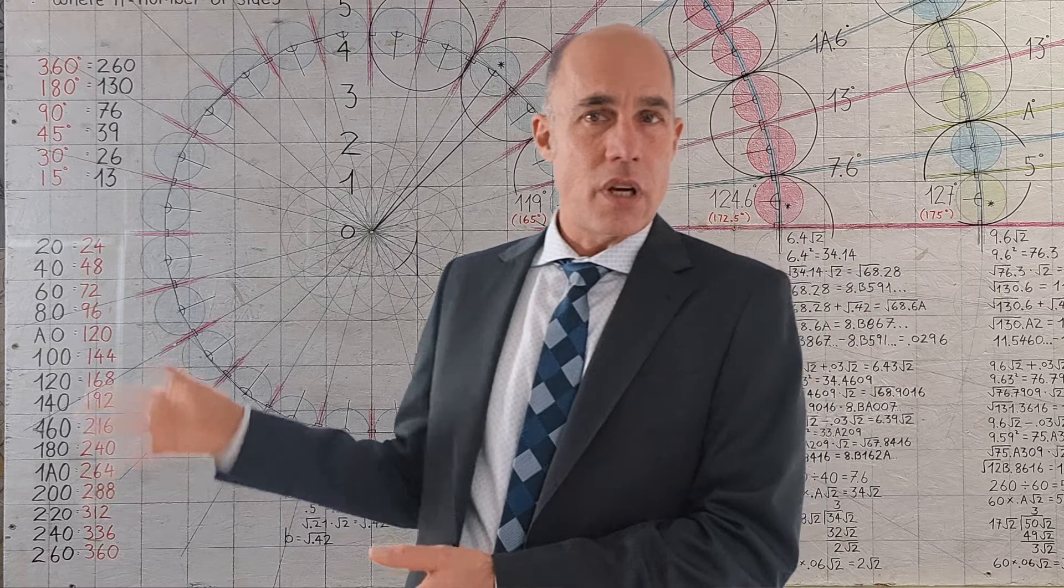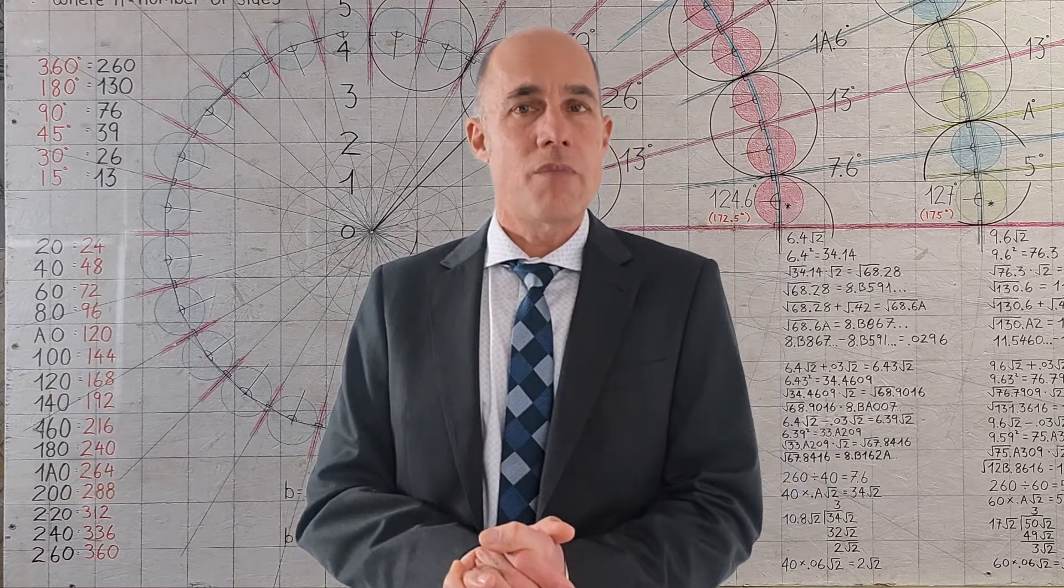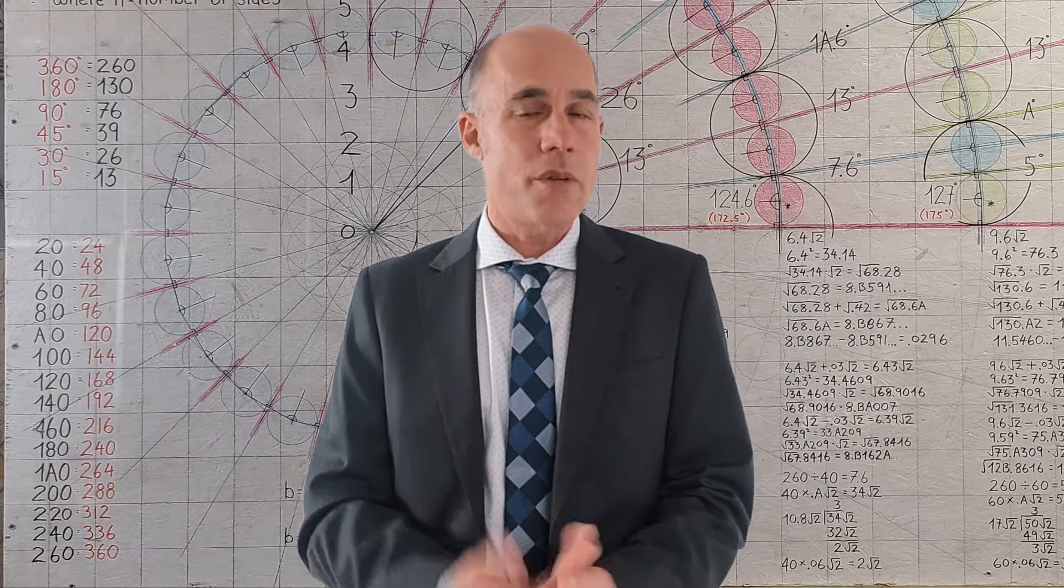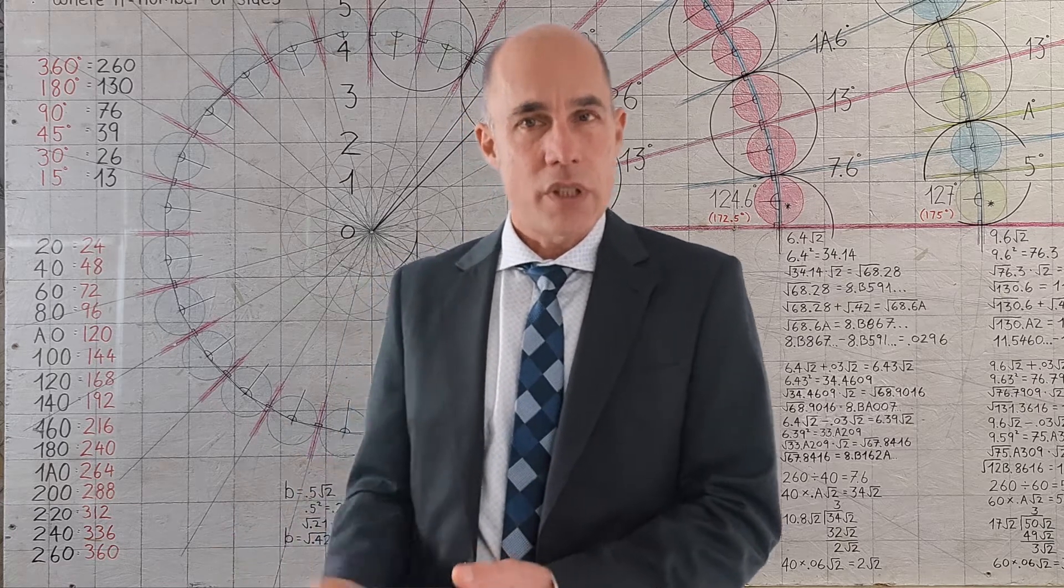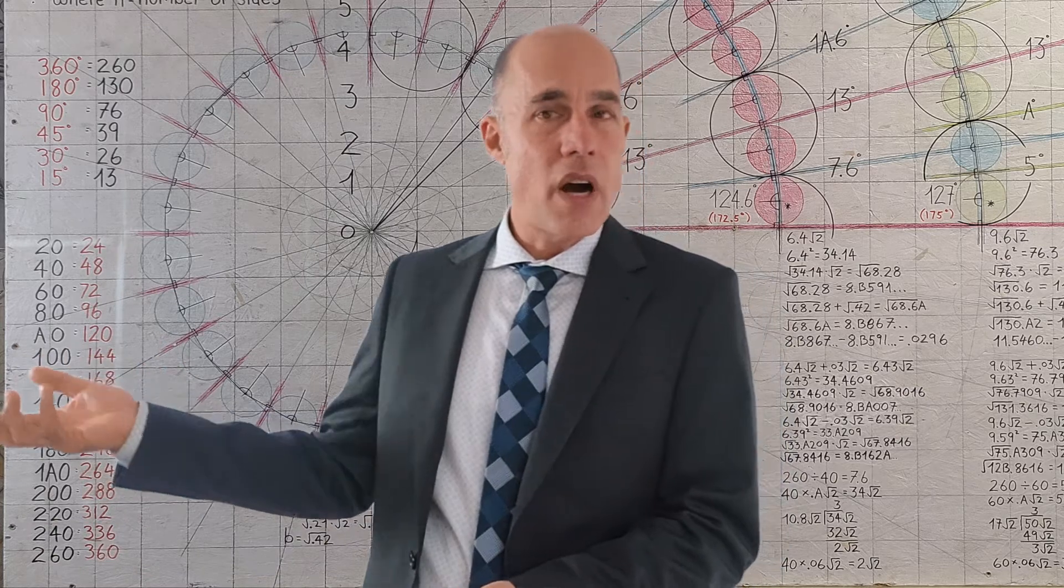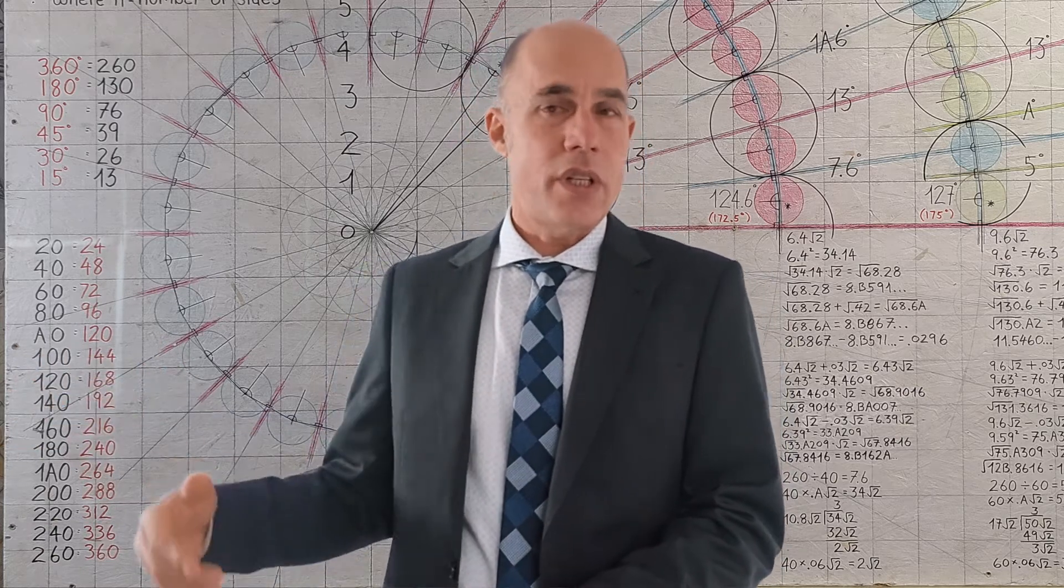So lower down here, we have two columns. The top one there, the short column, is just all the familiar, or some of the familiar degrees that we're used to. Again, in base 10 and base 12. So you can see, you know, 15, 30, 45, works out to 13, 26, 39.